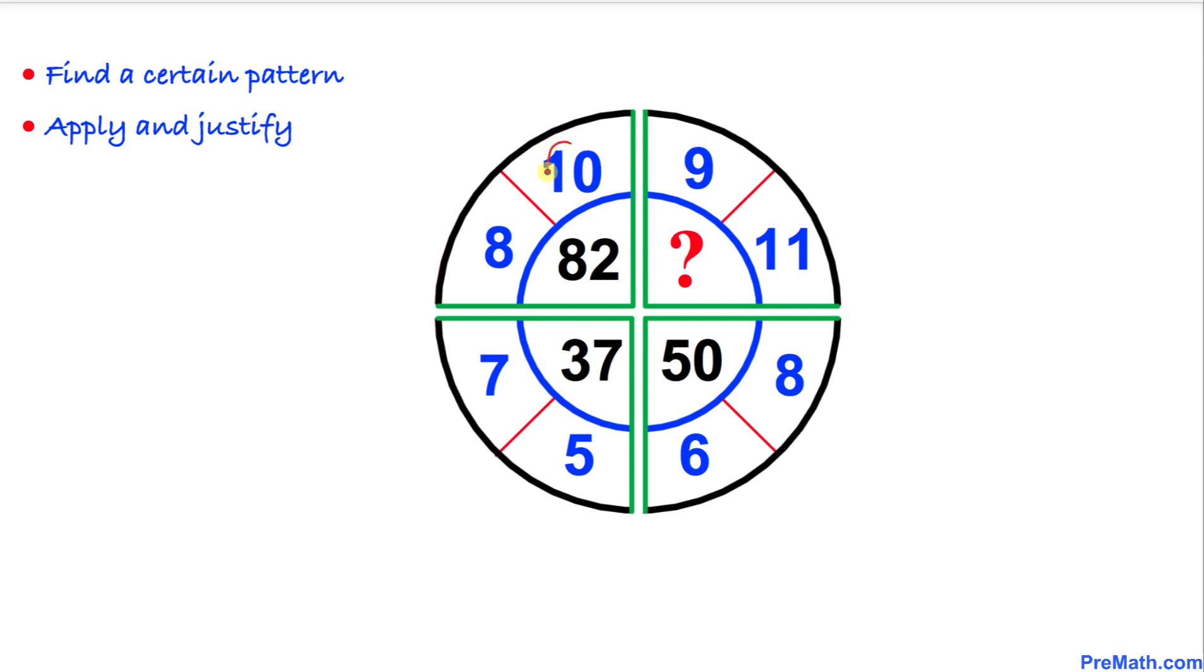Let's go ahead and take the square of these numbers. So we got 10 square plus this 8 square is going to give us 100 plus 64 is 164. And we are going to divide by 2. So we are going to get this number 82.